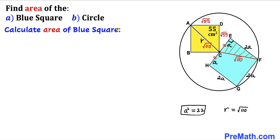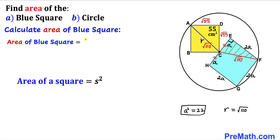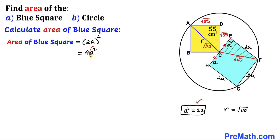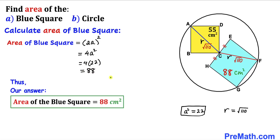Now let's calculate the area of the blue square. Using area = S², where the side length is 2A: area = (2A)² = 4A². Since A² = 22, the area = 4 × 22 = 88 centimeter square. The area of the blue square is 88 centimeter square.